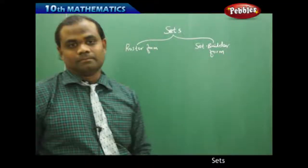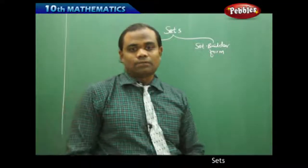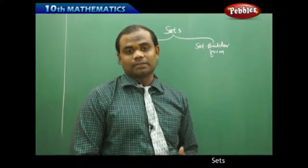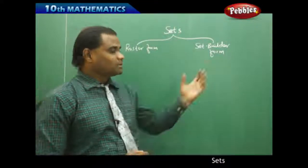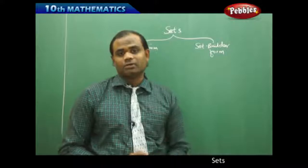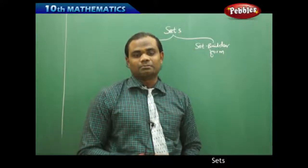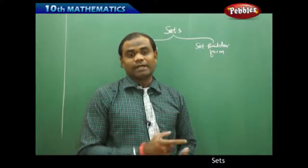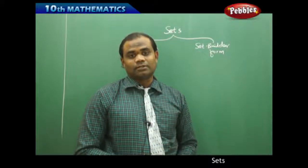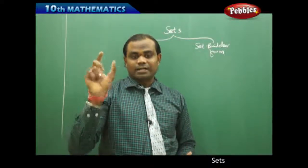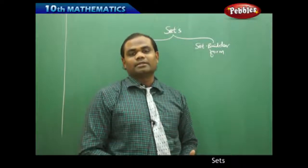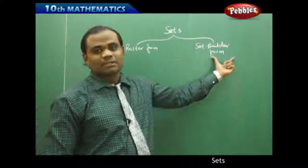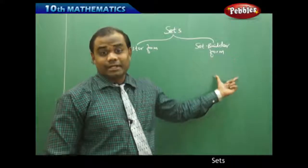The roster form is the direct inclusion of elements in the set. When it comes to the set builder form, it is not the direct way of writing the elements but an indirect form of representing them. We need to identify the statement and then write the elements in the roster form. So roster form is the direct step, while set builder form includes the indirect step.